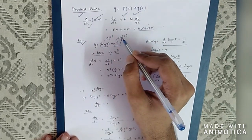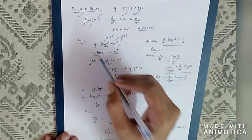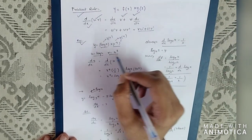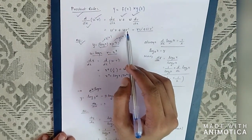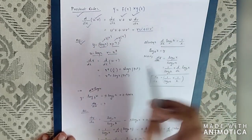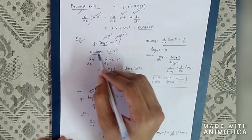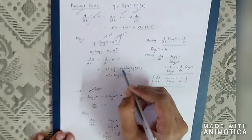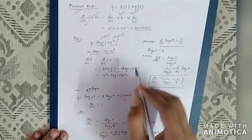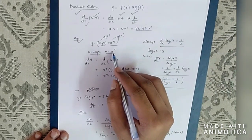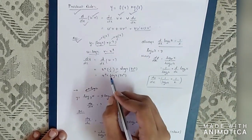Log(x) is a function and x cubed is a function — they are multiplied. If we differentiate, we will use the product rule. Let u = log(x) and v = x³. Applying the formula u'v + uv': first term is v into u dash — that is x cubed into 1/x. Plus u into v dash — log(x) into 3x squared, using the power rule x to the n minus 1.